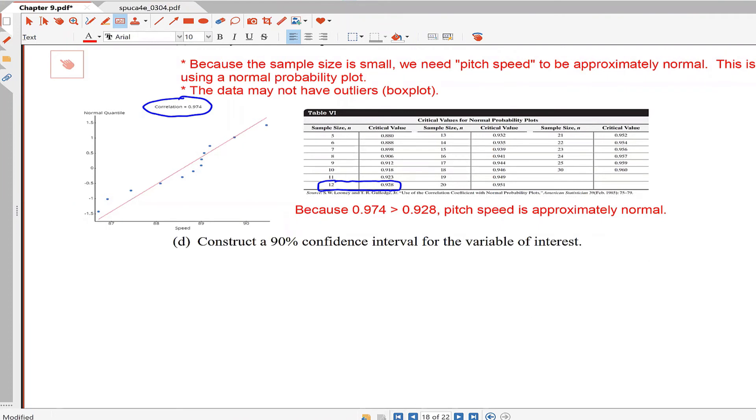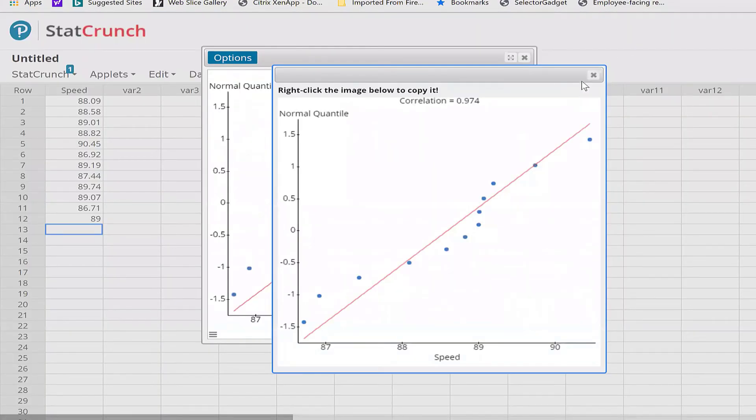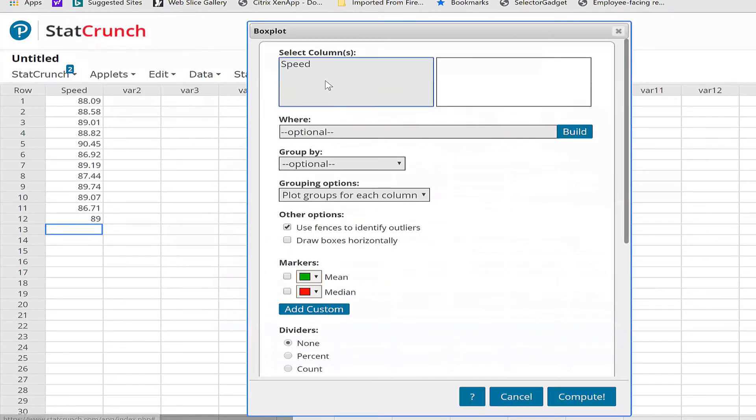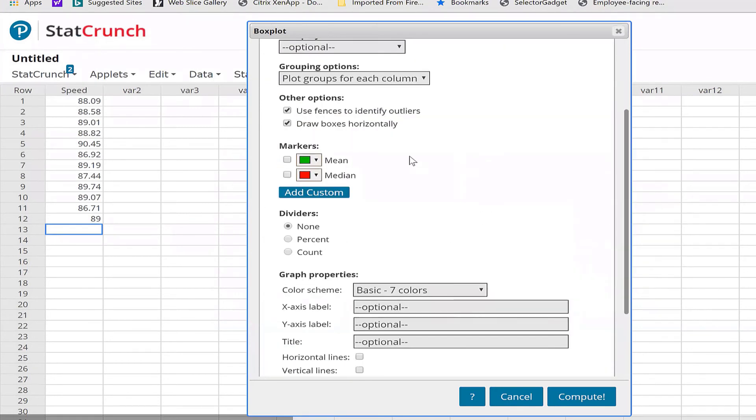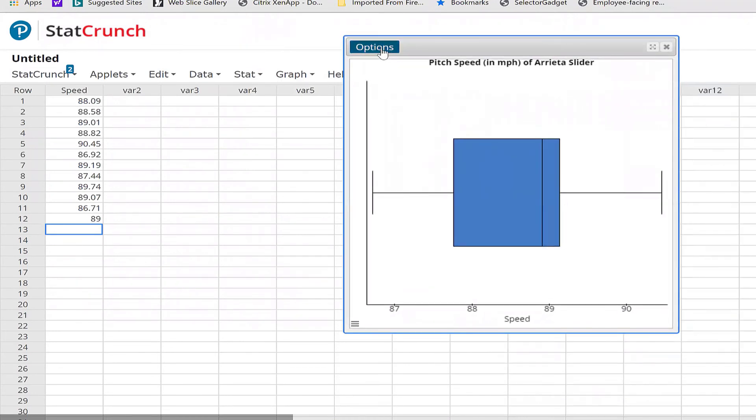The other thing we want to do is verify we have no outliers. We do that by drawing a box plot in StatCrunch. So there's my data again, graph, box plot of speed. Use fences to identify outliers needs to be checked, and draw boxes horizontally needs to be checked. This is pitch speed in miles per hour of Arrieta sliders. The box plot does not show any outliers.